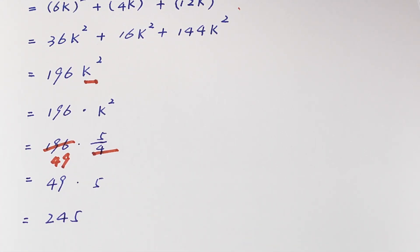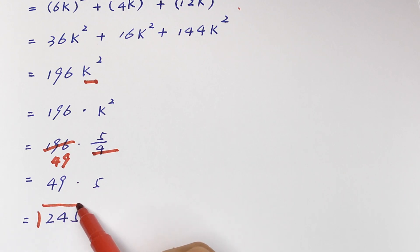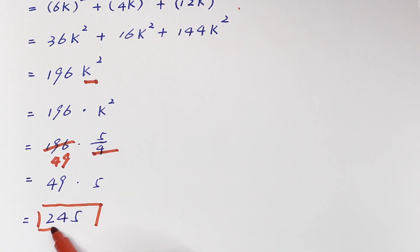Therefore, the answer for the value of a² plus b² plus c² is 245. Thank you for watching — see you in the next video, bye!